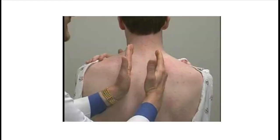You can also do this by using the ulnar aspects of your hands. Again, in those three domains that you looked at earlier on the surface anatomy, you can place the ulnar surfaces of both of your hands while you ask your patient to say 99, and you feel the vibration of the words 99 coming across onto the surface of your hands.